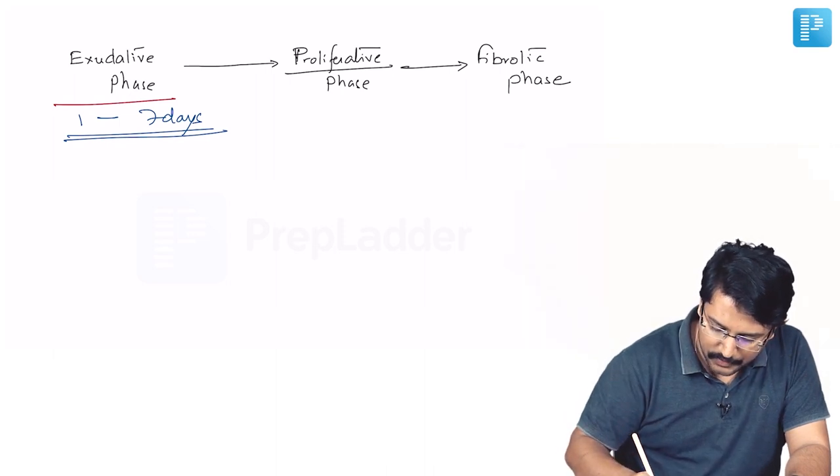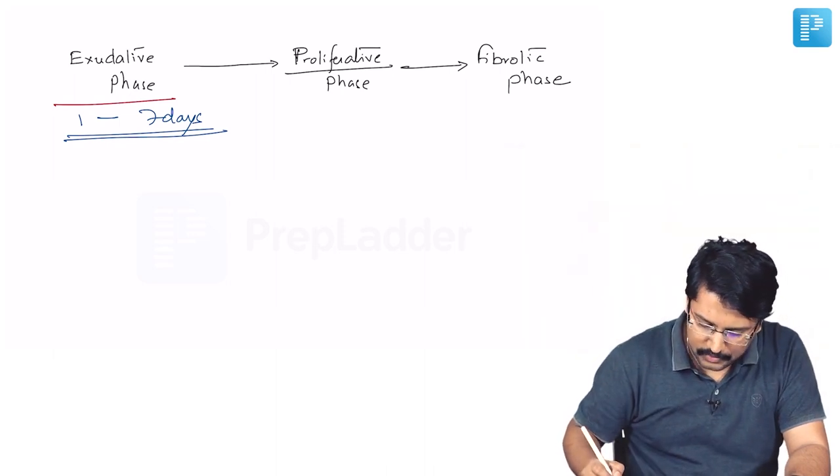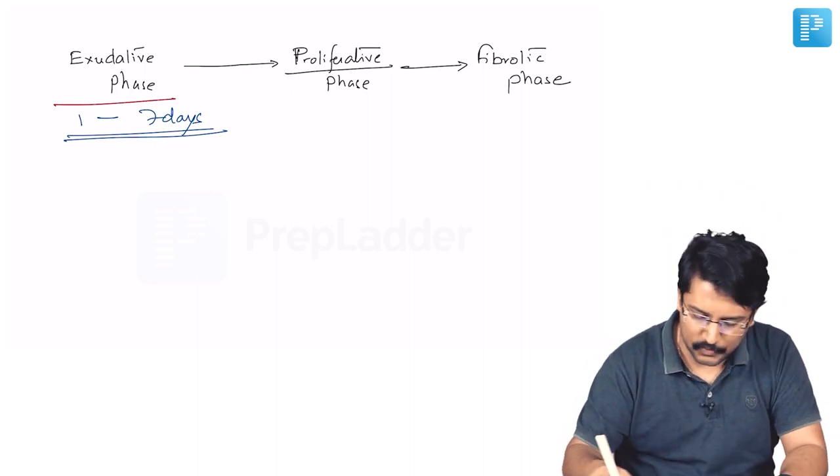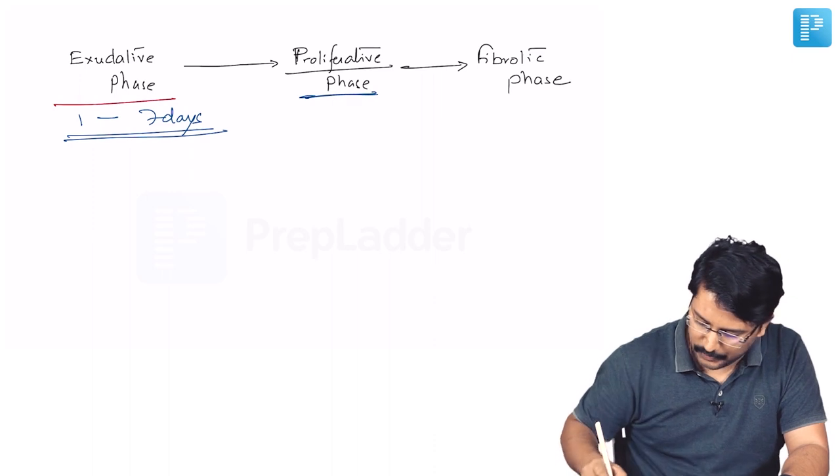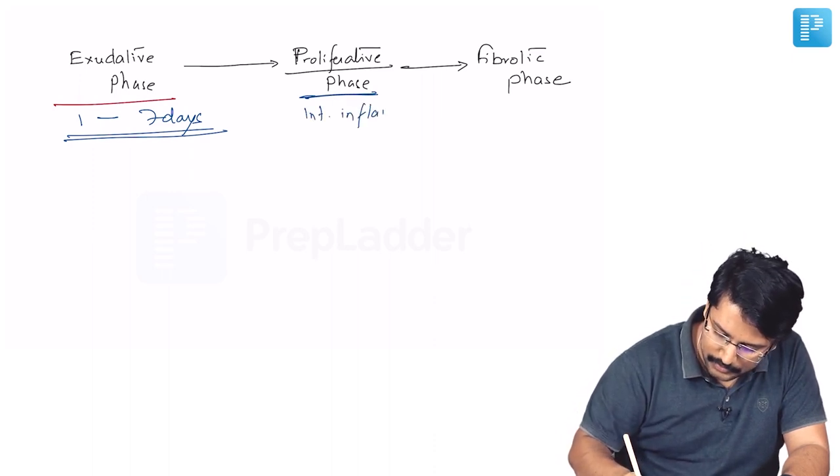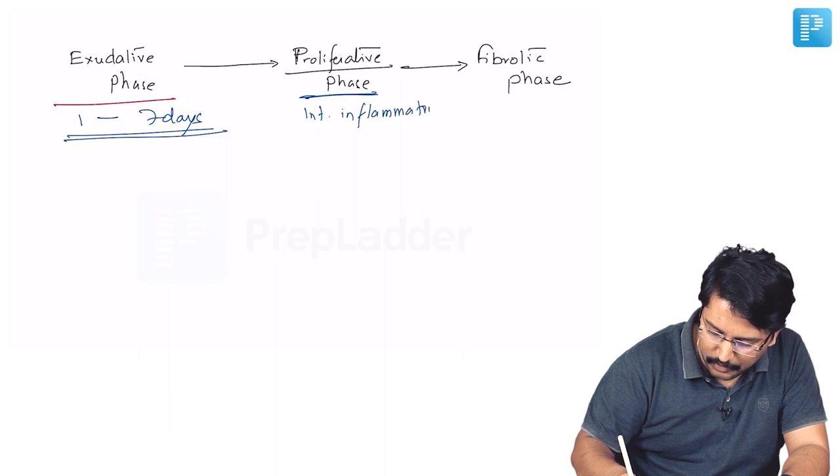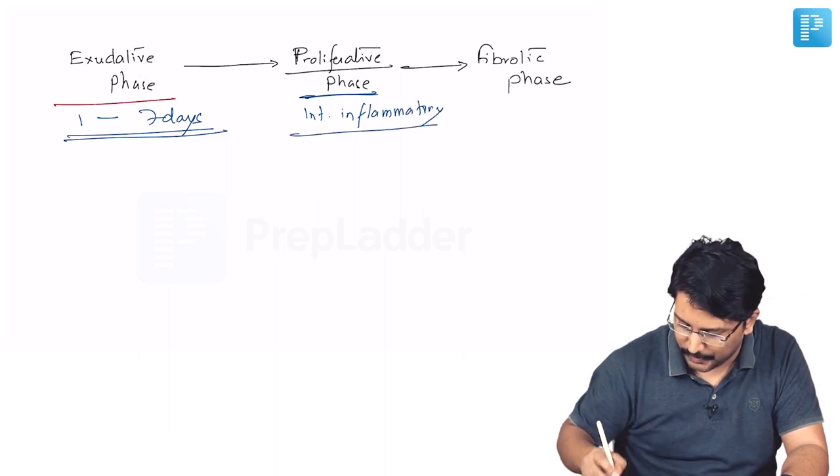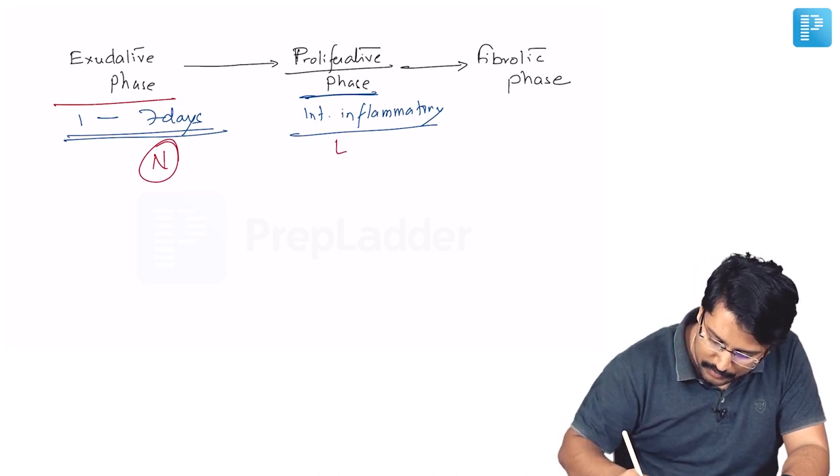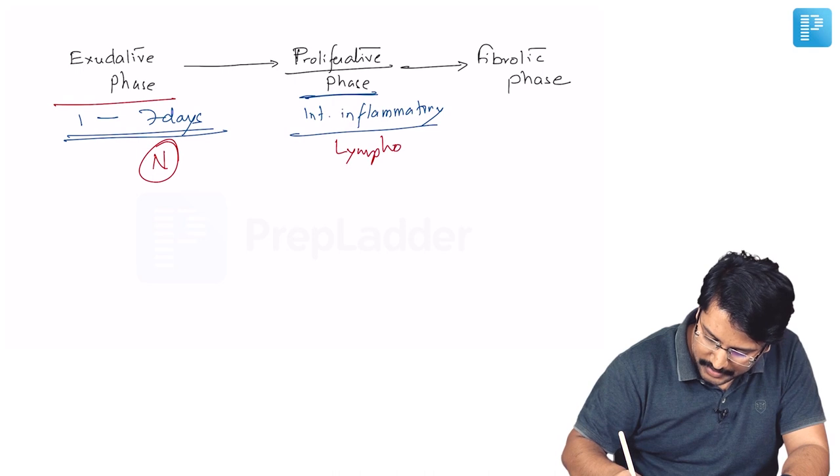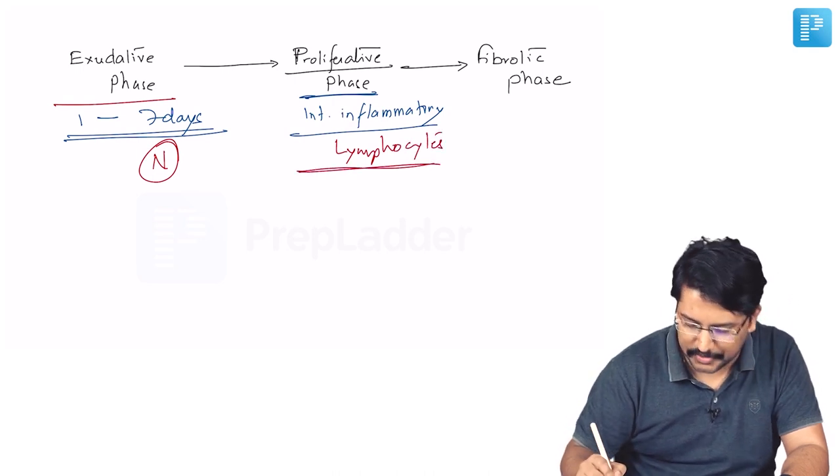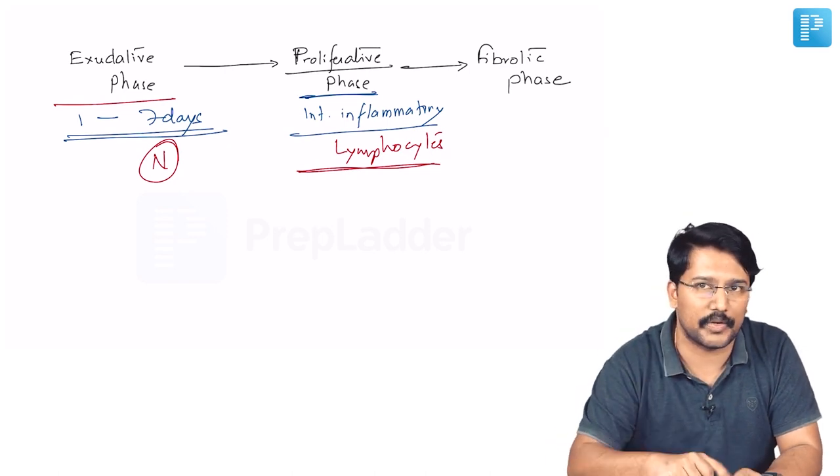In the second phase which is called proliferative phase, after all these injuries happen body obviously tries to repair the damages. That is happening in the proliferative phase. Here we see some degree of interstitial inflammation. So the inflammatory focus is now shifted from alveolar spaces to the interstitium. And from the neutrophils that we see in the exudative phase this is now shifted to lymphocytes. Lymphocytes take over from the neutrophils then interstitial inflammation starts appearing and the alveolar repair starts happening.